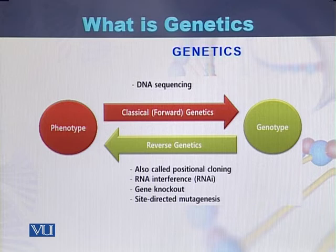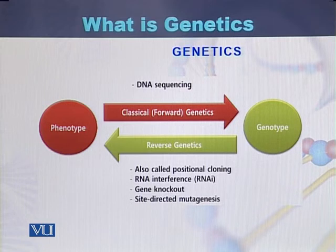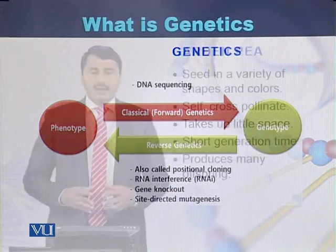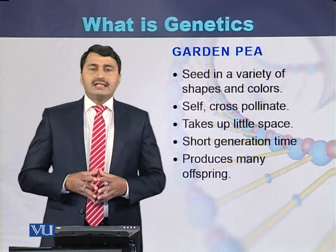Different methodologies are used for studying genetics in reverse. Those methodologies include positional cloning, RNA interference, gene knockouts, and other methods used to study phenotype based on genotype.